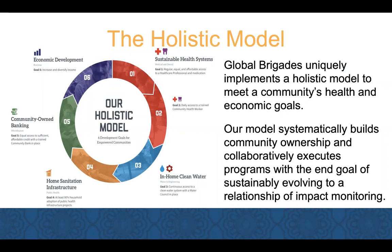GB uses the holistic model to choose the communities they're receiving brigade as well as how those brigades are assigned. This is called the holistic process, and by following these six steps — community identification, community partnership and needs assessment, baseline community data, program implementation, holistic model staff follow-up, and sustainable transition — there's going to be a greater chance that the community is reaching the level of sustainability.